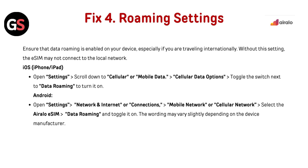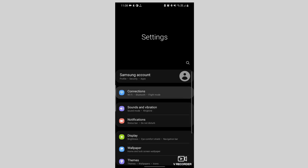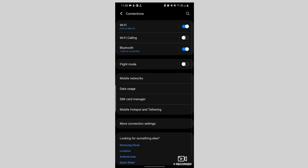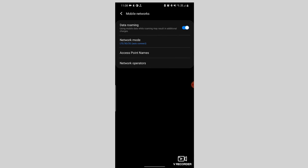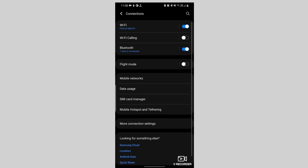Fix 4: Roaming settings. Ensure that data roaming is enabled on your device, especially if you are travelling internationally. Without this setting, the eSIM may not connect to the local network. For iPhone, iOS, or iPad: open Settings, scroll down to Cellular or Mobile Data, tap Cellular Data Options, and toggle the switch next to Data Roaming to turn it on. For Android: open Settings, go to Network and Internet or Connections, then Mobile Network or Cellular Network, select the Airalo SIM, then tap Data Roaming and toggle it on. The wording may vary slightly depending on the device manufacturer.